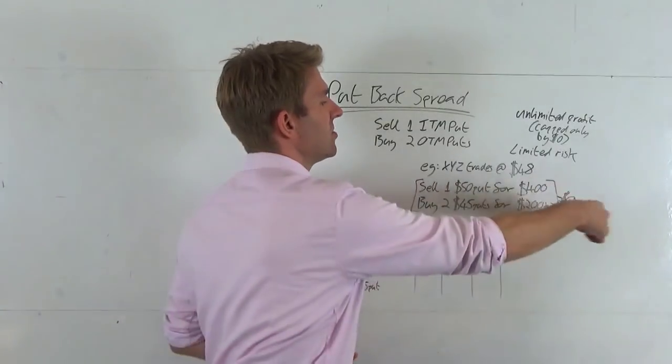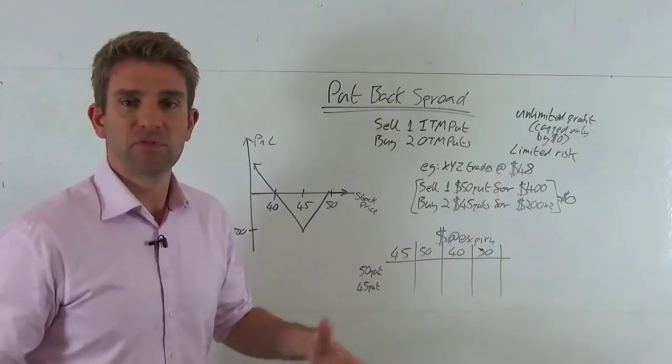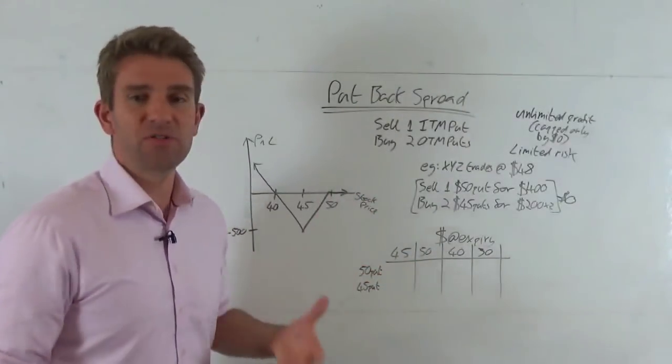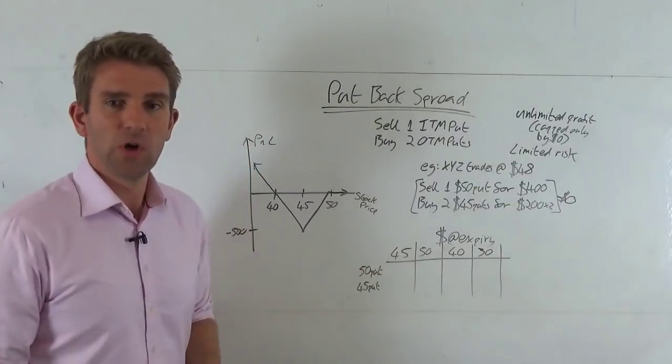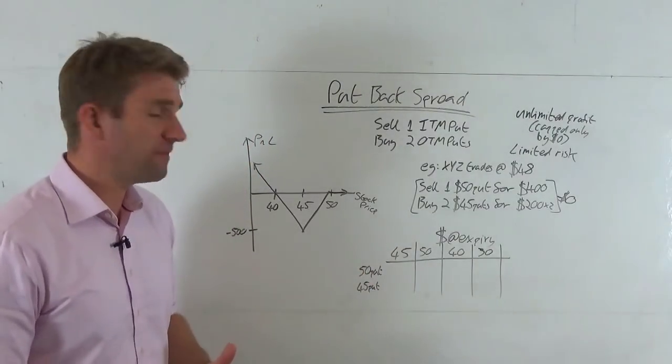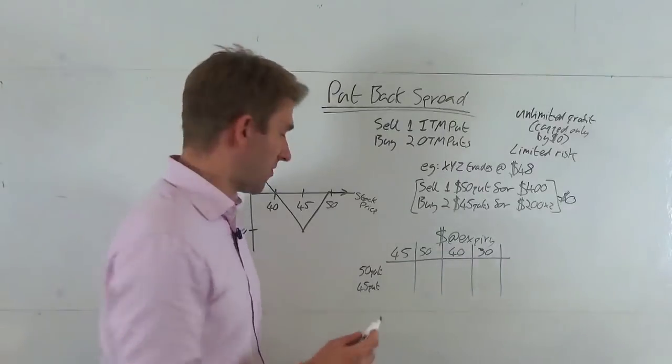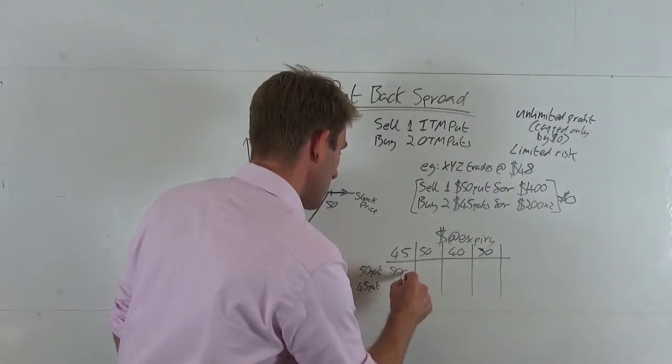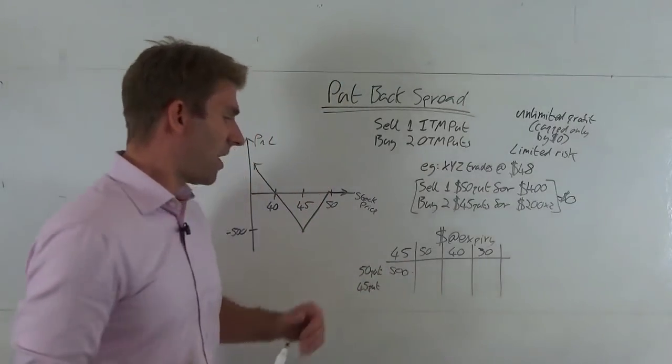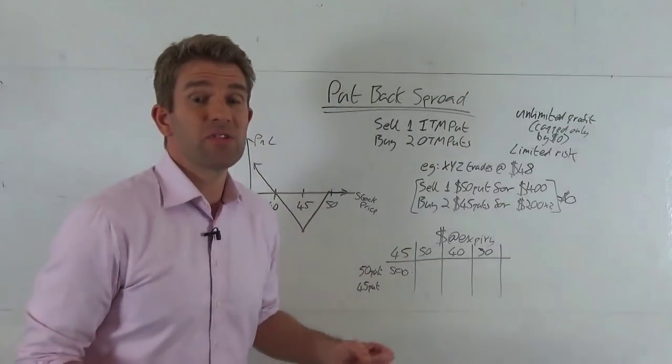What happens for various scenarios at expiry? Let's imagine we expire at 45. What's going to happen to the value of the $50 put? Well, the $50 put is worth $500, right? Because we are down by $5 - we've got the right to sell something at $50, it's currently trading 45 - $500 worth of value on that. The $45 put is worthless.